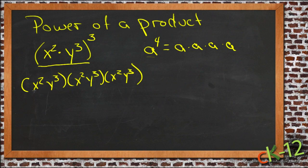So in this case, we'd end up with x squared, x squared, and x squared, or x squared times itself three times. And then y cubed, y cubed, y cubed.